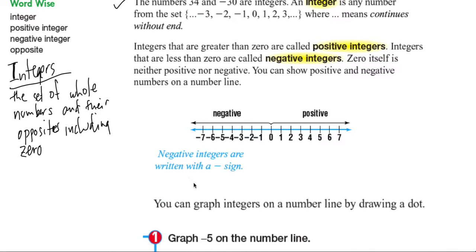Negative integers are written with a negative sign and positive integers can be written with a positive sign or simply without a positive sign. If it doesn't have a positive sign, it is understood that it is a positive integer.